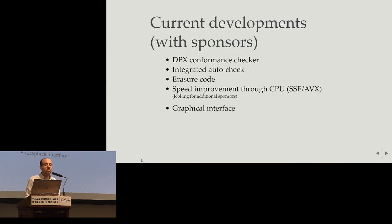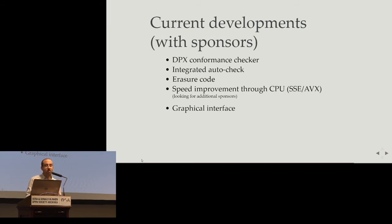The current development: we are improving the DPX Conformance Checker and the integrated auto-check. When you run RAWcooked --check on your directory, there is automatic checking to ensure all is correct, plus error correction code so we can fix a buggy file. We will also work next year on speed improvements for FFV1, as it may sometimes be considered a bit slow. And we want to provide a graphical interface so everyone can use it very easily.